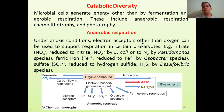Now we will move to another part of this lecture: catabolic diversity. Microbial cells generate energy by means other than fermentation and aerobic respiration. Although aerobic respiration and fermentation are widespread, microbial cells are found everywhere — including conditions where neither of these processes is possible. These alternative processes are anaerobic respiration, chemolithotrophy, and phototrophy.